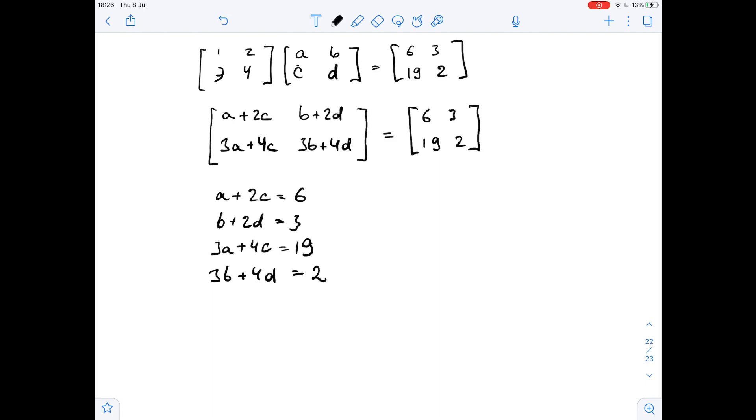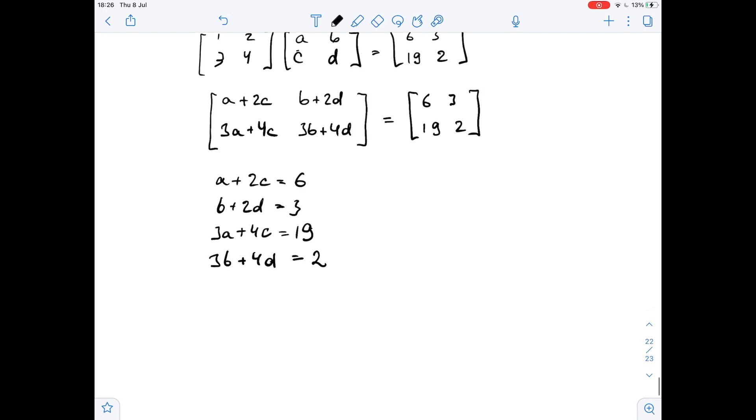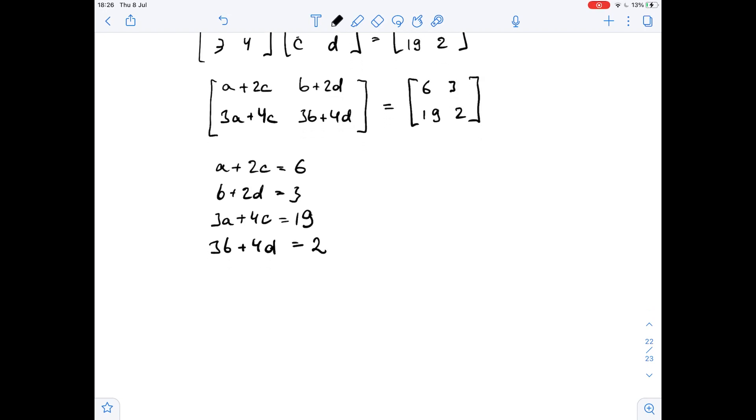Well, to find the values of a, b, c, and d here, we will subtract three times equation 1 from equation 3. So 3a plus 4c, this is equation 1, this is equation 2, this is equation 3, this is equation 4.